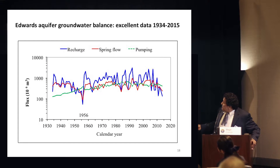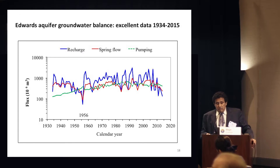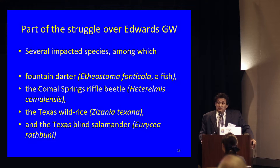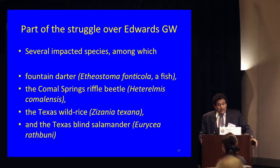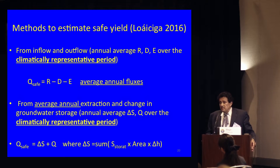Here is the data for that aquifer. It shows annual recharge in blue. You can see the spring discharge, which follows recharge with a time delay, and groundwater extraction that leveled off in 1980 due to a variety of disputes over groundwater — an excellent data set. The struggles of the Edwards Aquifer are not seawater intrusion or land subsidence, but rather the impact on threatened species in the aquifer: beetles, fish, salamanders, and aquatic plants. So there's more to aquifers than simply hydraulics.